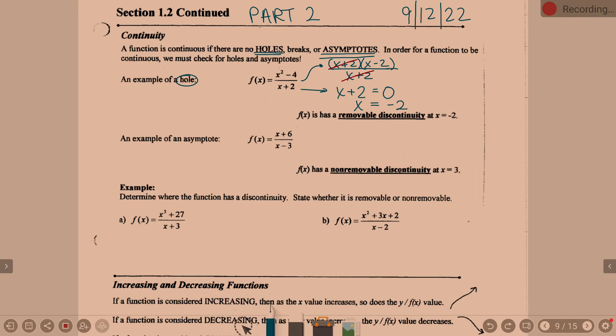Subtract the 2 over, x equals negative 2. Now, it's either a hole or an asymptote. What happened to the factor that represents x equals negative 2? That factor could cancel.